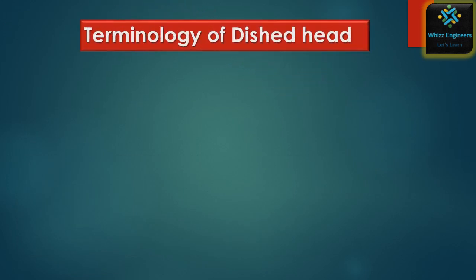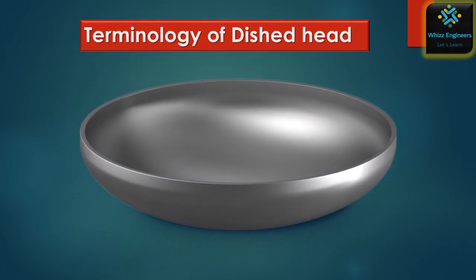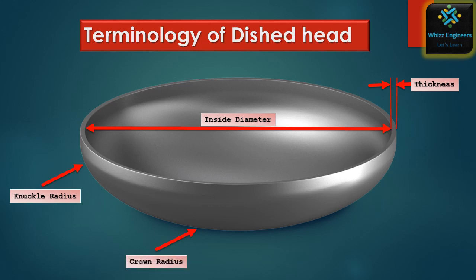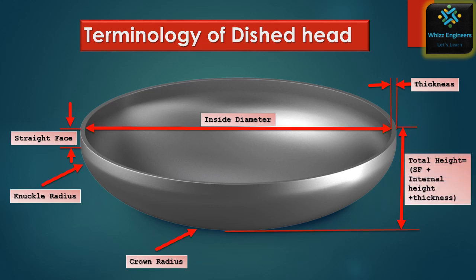Before going into further details of the different types of heads, we will first cover the terminology. This includes internal diameter and thickness. The knuckle radius is the transition between the straight face and the crown radius. Total height is equal to straight face plus internal height plus dish thickness.